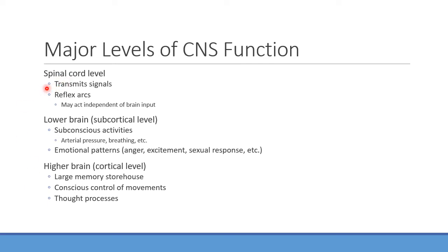Looking at the major levels of the nervous system: the spinal cord level is good for transmitting signals and reflex arcs, largely independent of brain function. Lower brain or subcortical levels handle subconscious activities like blood pressure, breathing, and wakefulness, as well as emotional patterns like anger and excitement. The higher cortical level handles long-term memory storage and conscious control of movements and thought processes.